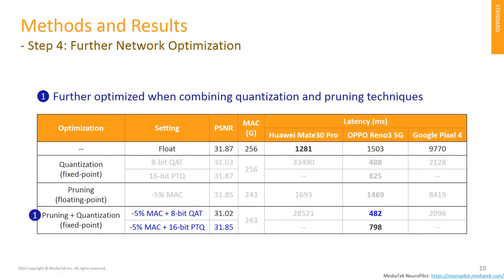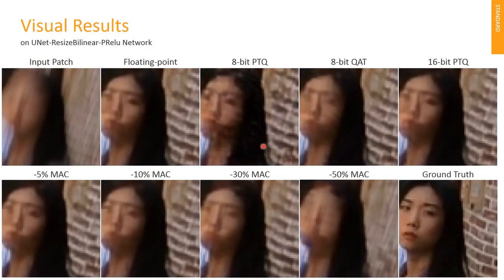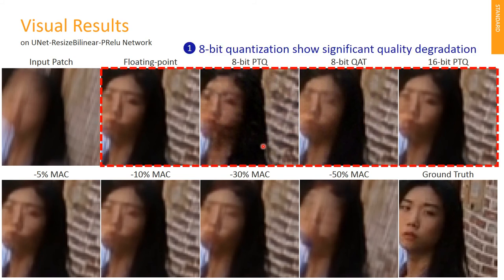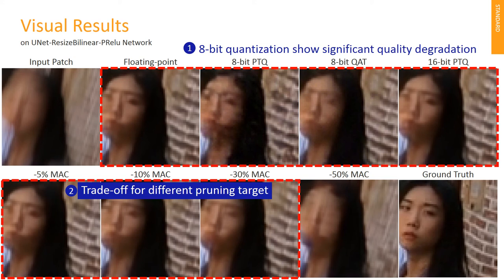In the final step, we combine both quantization and pruning to optimize the network to get better latency. Finally, we get two optimized networks — one is better in PSNR, and the other is better in latency. This page shows the visual result of different optimization techniques. In addition to PSNR drop, 8-bit quantization also shows quality degradation compared with 16-bit quantization and floating-point results. This implies that 8-bit quantization, which is widely used in classification and detection, is not enough for image restoration and enhancement. For network pruning, there is a trade-off between quality and complexity, and you could choose based on your requirement.